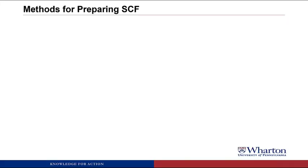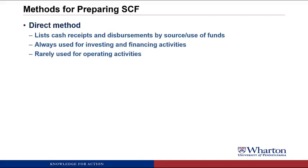There are two methods for preparing the statement of cash flows, which are rather creatively titled the direct and indirect methods. In the direct method, you just list the cash receipts and disbursements by the source or use of funds — where all the cash came from and where you paid cash out to. This method is always used for investing and financing activities, but is rarely used for operating activities.